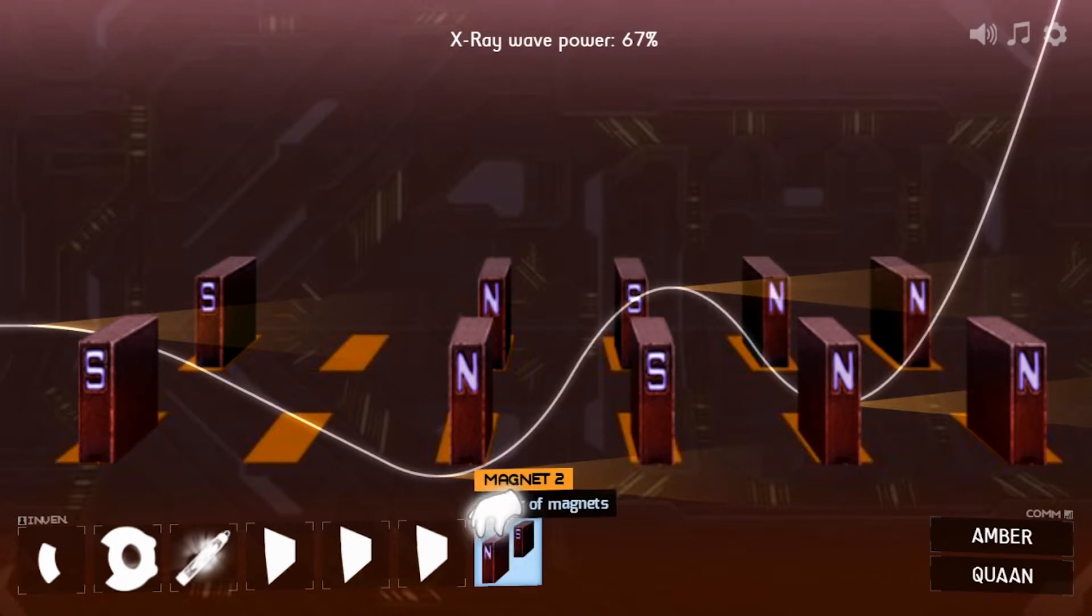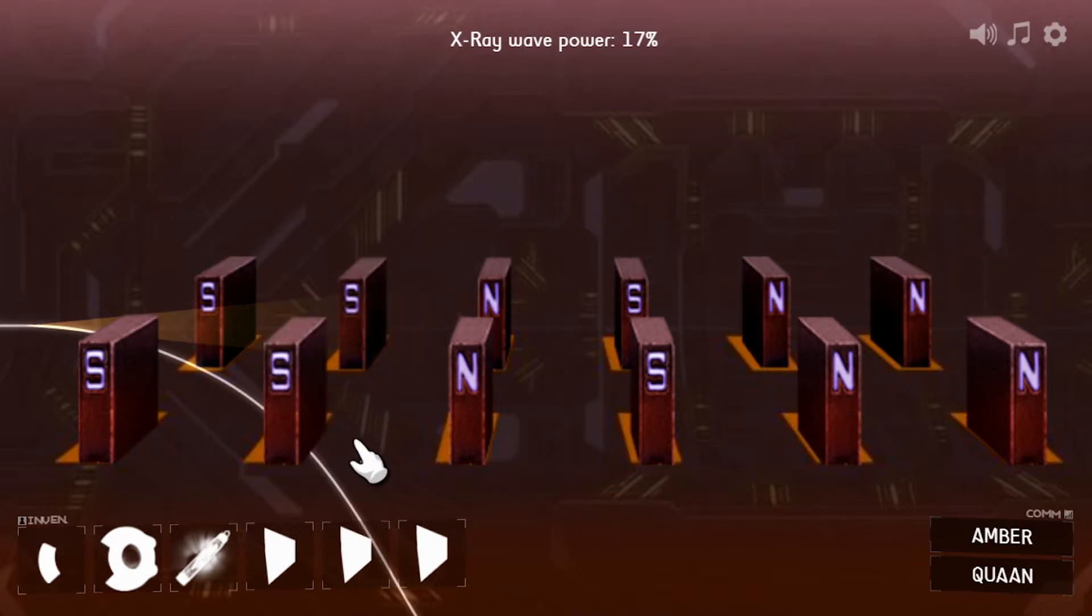To get a concentrated beam of X-rays like in a synchrotron, you need lots of bends. And you get that by alternating the magnet pairs: north, south, north, south.